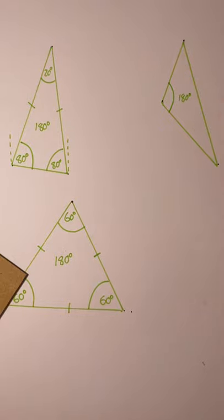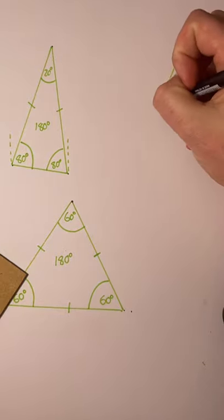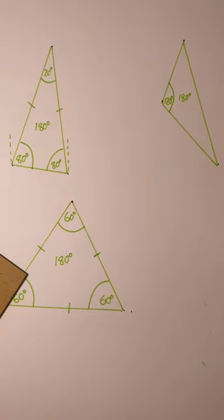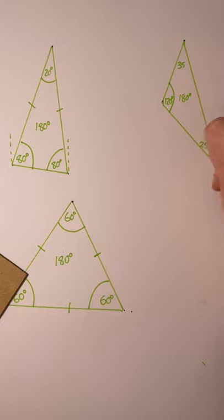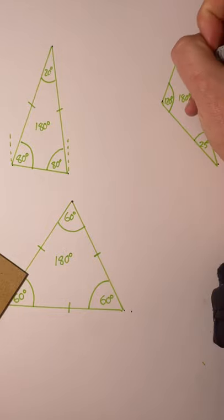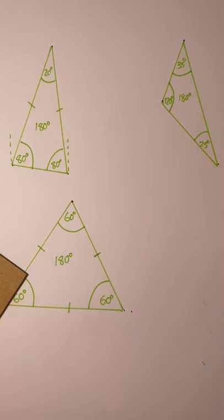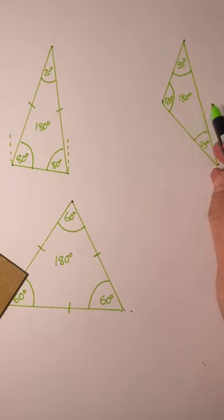I might say that that's 120 right there, a bit small, 120, leaving 60. So that might be 35, and that might be 25. So it still equals 180 degrees, but every side is different.